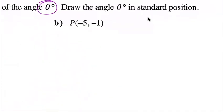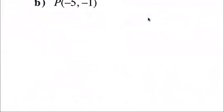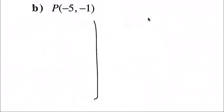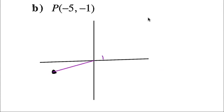Question B: point (-5, -1). Draw the coordinate grid, plot negative five, negative one somewhere in quadrant three. Draw the line to indicate the angle from the origin, draw the arc from the initial arm through to the angle, add an arrow, call it angle theta, and label the point negative five, negative one. Those values on that point will become fairly important.